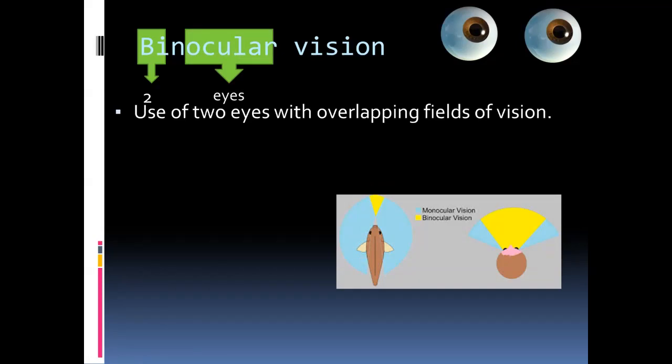Many organisms have their eyes on the side of their heads — for example, pigeons. That allows a greater area to be viewed, but the area for binocular vision is very small. Whereas organisms like humans, who have eyes in the front of the head, have a smaller range of vision sideways, but the area of overlap of the two eyes — the area of binocular vision — is larger.